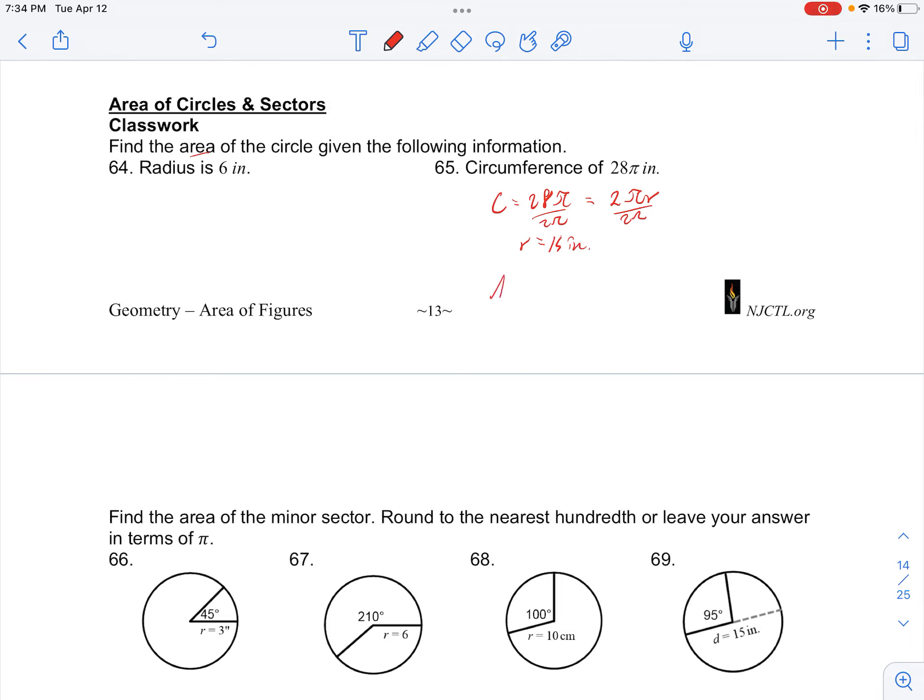And if we want to find the area, area is π times r squared, which is 14 inches squared, so our area would come out to be 196π inches squared.